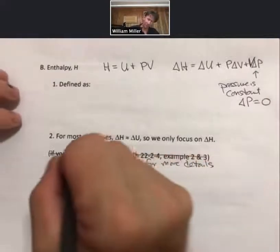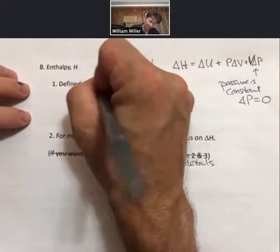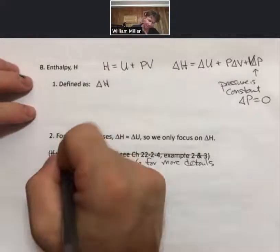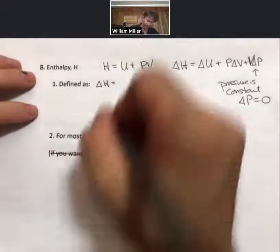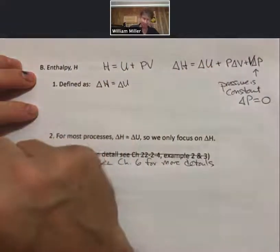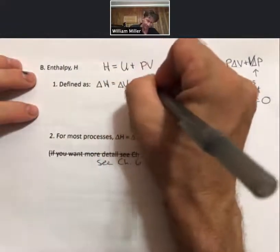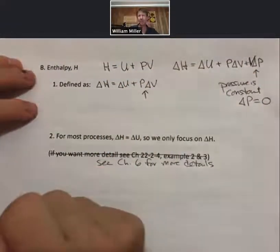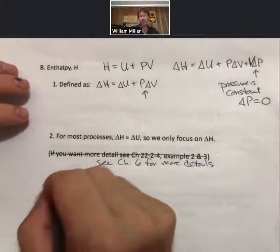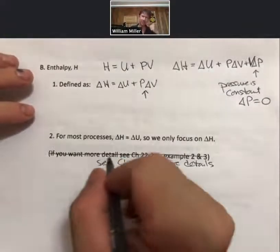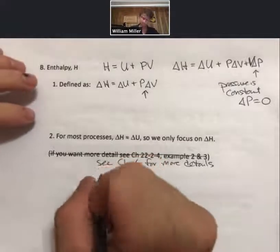And so the definition that we want to work with is actually for delta H, and it is going to equal delta U plus P delta V, where P delta V is the pressure volume work that we've talked about in the previous part of this lecture outline.